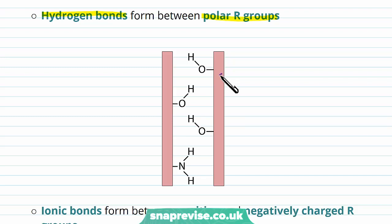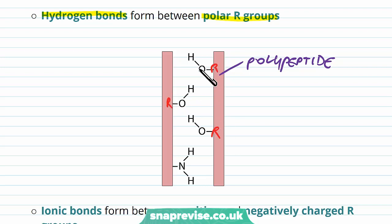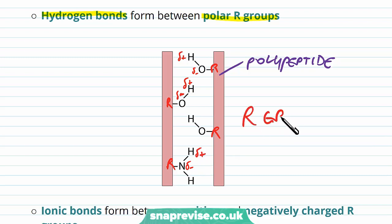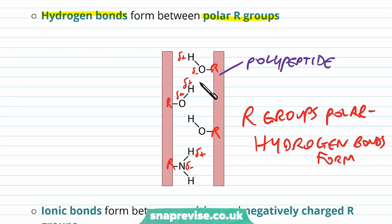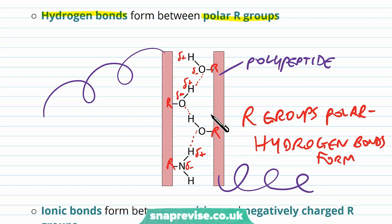We can have hydrogen bonds, and this time they're between polar R groups. We can have different parts of the polypeptide chain, and sometimes there are these groups sticking out from the R groups. Some R groups are purely O's and H's, and they have delta minus and delta plus charges. Some R groups are amine groups, so they have another delta negative and delta plus. As long as the R groups are polar, hydrogen bonds can form between any delta minus and delta plus, and that might keep one alpha helix in close proximity to another alpha helix.